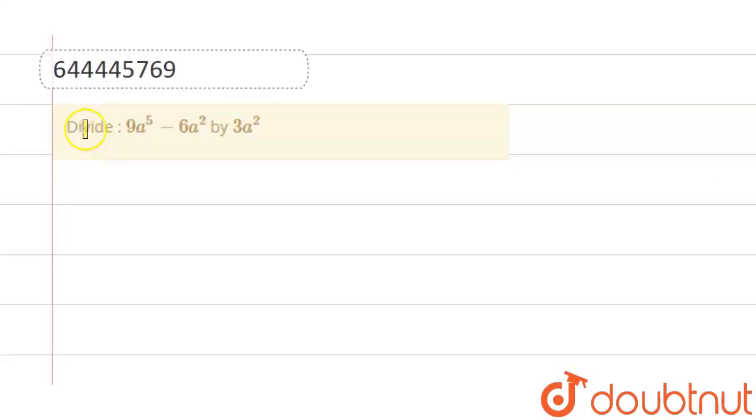Welcome to Doubtnut. Our question is divide 9a raise to 5 minus 6a square by 3a square. That is, 9a raise to 5 minus 6a square divided by 3a square.